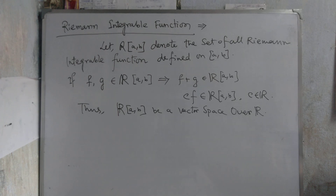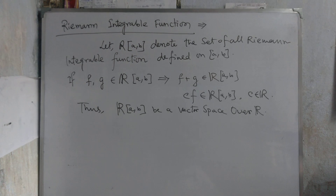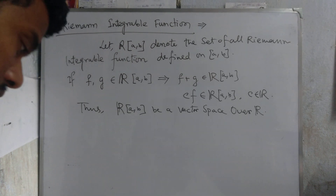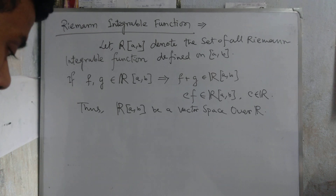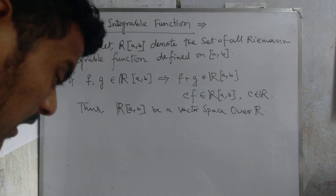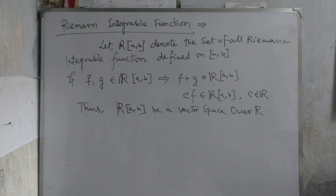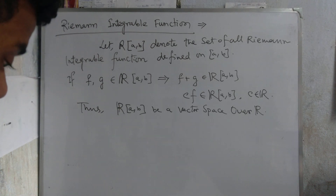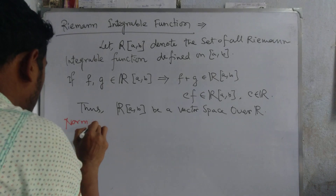So Riemann integrable functions R(a,b) form a vector space over ℝ. We have thus shown that Lipschitz functions, Riemann integrable functions, and polynomial functions all form vector spaces over ℝ. Now we go to the definition of a norm on a vector space.